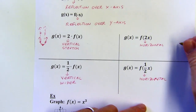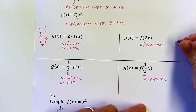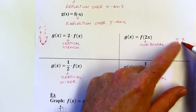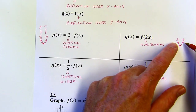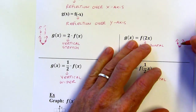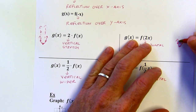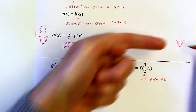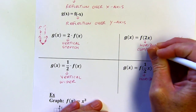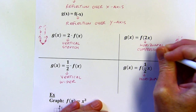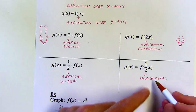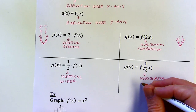We can go through that same kind of thinking with a horizontal change. If I can only move these two points left or right, that would be a horizontal change. Well, if it's getting narrower, I'd have to push them in to get a narrower parabola, so that's going to be a horizontal compression. Where this one is going to be, since it's getting wider with a horizontal change, that would be a horizontal stretch.